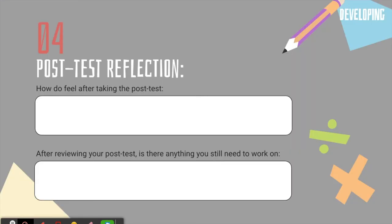The next thing on the pathway board: after going through all the small group lessons and students have had time to work on the pathway boards, I give them a post-test to see their growth. I ask how they feel after the post-test, and after reviewing it, is there anything they still need to work on? Maybe I can find an extra five minutes to pull that kid — in the morning or when a small group finishes early — and say 'I saw you said you still needed help on this, let's go over it quickly.' That's the post-test reflection, the last part of the pathway board.